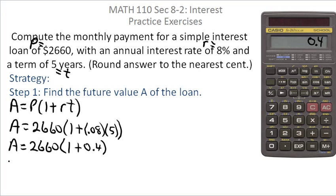And now you want to add 1 to that. So you'll get A is equal to 2660 times, and you already have the 0.4 in there, so all you need to do at this point is say plus 1 equals.